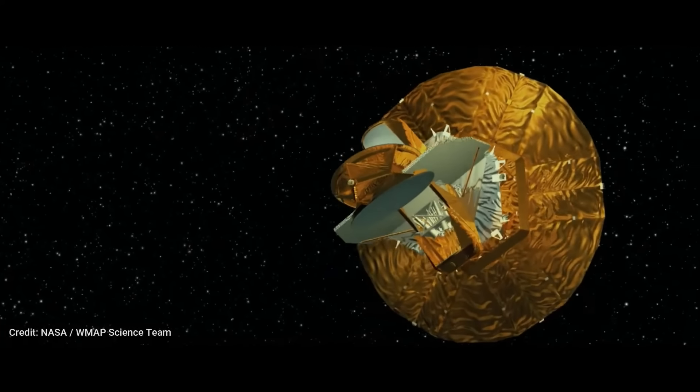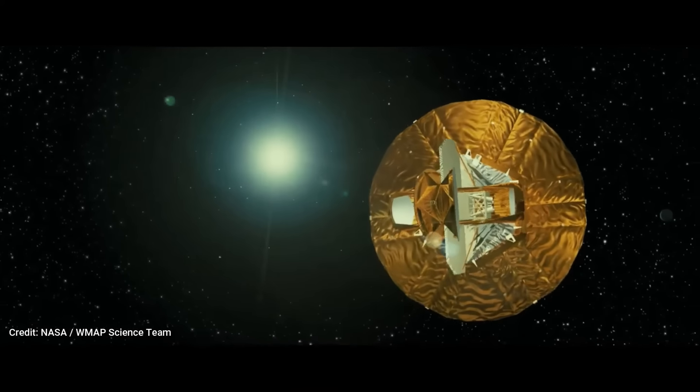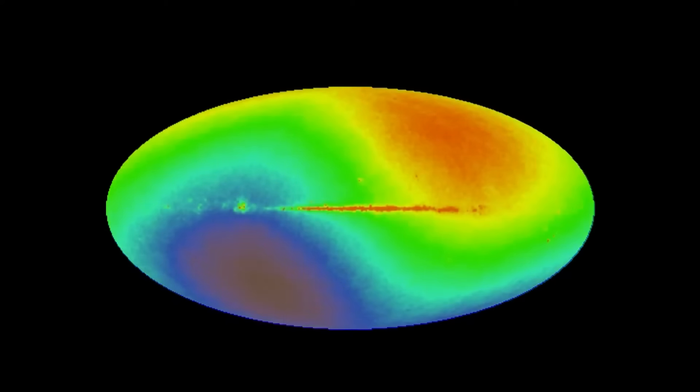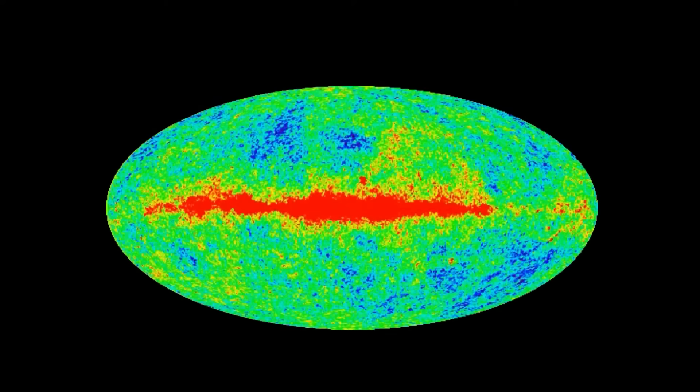Generated by NASA's Wilkinson Microwave Anisotropy Probe, or WMAP satellite. This comparison underscored a consistent and unexpected pattern. Galaxy clusters were indeed moving with significant velocity in a shared direction across vast cosmic distances.